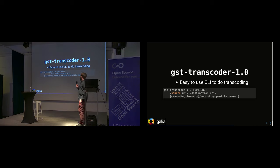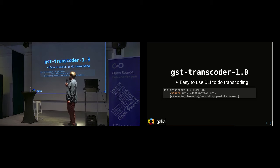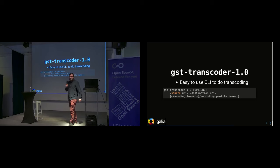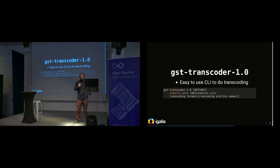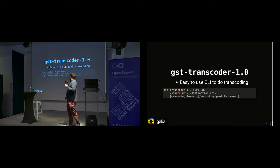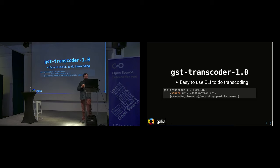On top of all that, we built a GST Transcoder command line interface. It takes the source URI, destination URI, and then the encoding format you want the file transcoded into. The tool will also use well-known encoding targets based on the extension of the destination URI. So if you want to transcode a Matroska file into MP4, it has well-known encoding targets that say: for MP4, use H.264 and AAC.